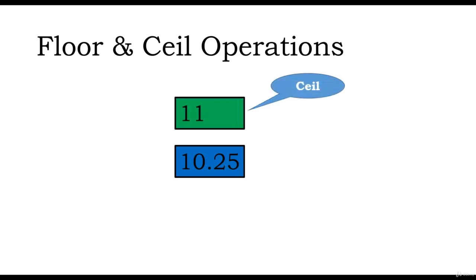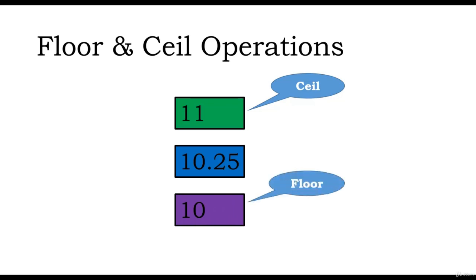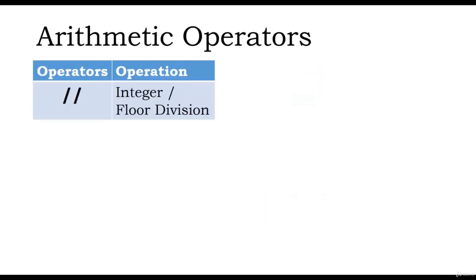Before we move on to the integer division or floor division operator, let us look at mathematical floor and ceil operations. Let us consider a value 10.25. The ceil operation performed on a value gives the next integer — so the ceil of 10.25 will return 11. Similarly, the floor operation gives the greatest integer less than or equal to the value. So the floor of 10.25 will return 10, since 10 is the greatest integer less than or equal to 10.25.